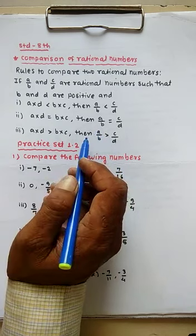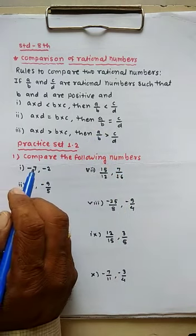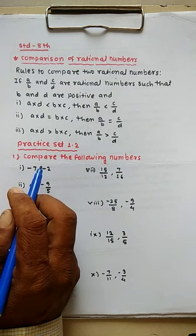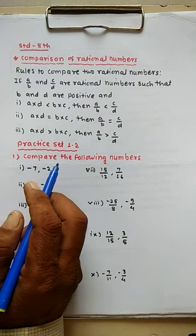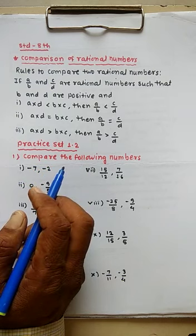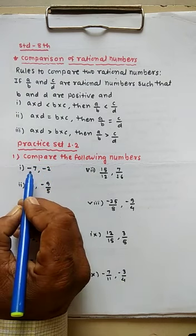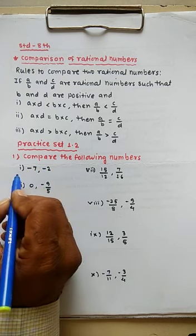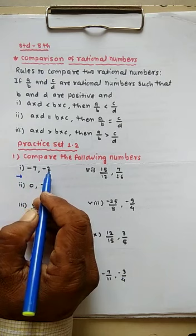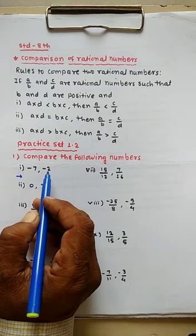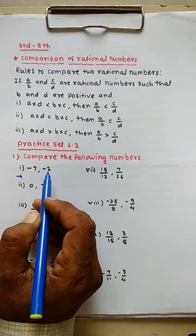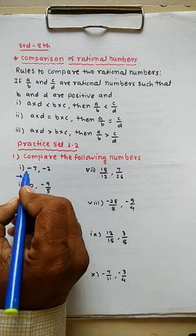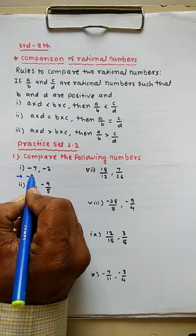Practice Set 1.2 — compare the following numbers. First example: minus 7 and minus 2. The first number is negative. Minus 2 is greater than minus 7, so the first number is greater.